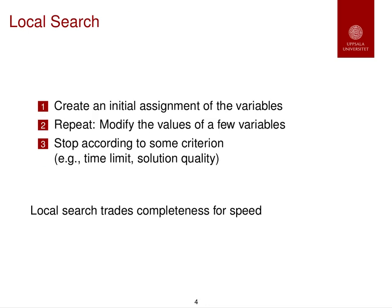Local search is a search procedure where you start from an initial assignment of the variables and repeatedly modify the values of only a few variables, stopping according to some criterion — if you run out of time or if you find a solution that is good enough. Local search is an incomplete method that trades completeness for speed.